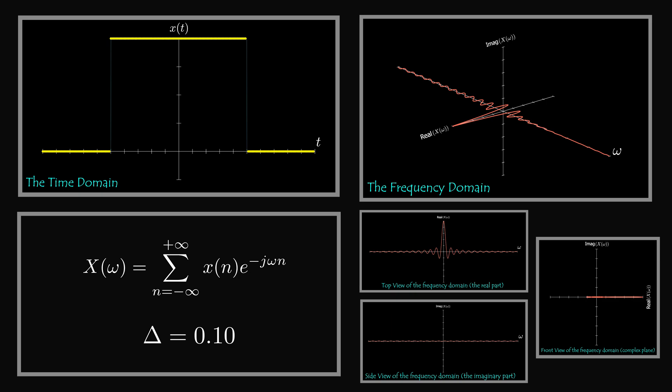So a discrete time domain signal corresponds to a periodic frequency domain, with the period depending on the sample time — the larger the sample time, the smaller the period. A continuous time domain signal has an aperiodic frequency domain. The reverse is also true, as we will see in a second.